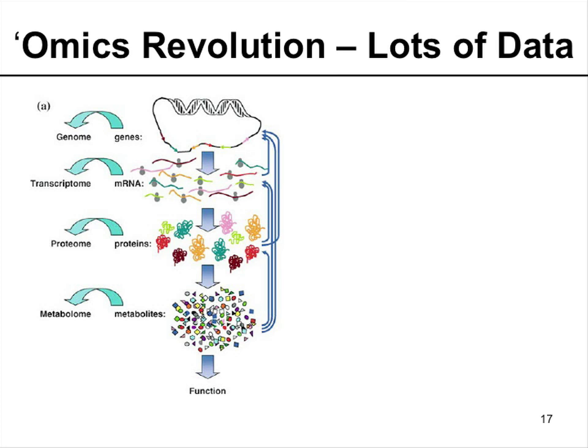Now let's move into the omics revolution, and this is truly where we're getting a heck of a lot of data. From the bug's perspective, we obviously have genes, which leads to the genome and genomics — the study of that — which basically is the potential of the bug to do certain things. Just the potential.